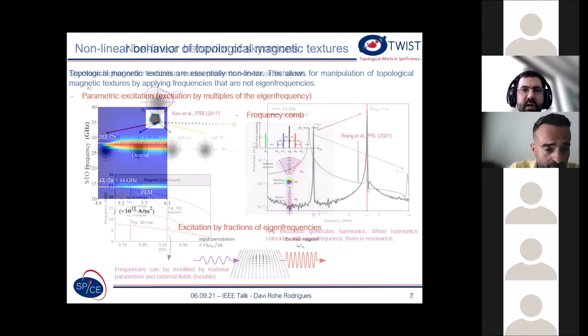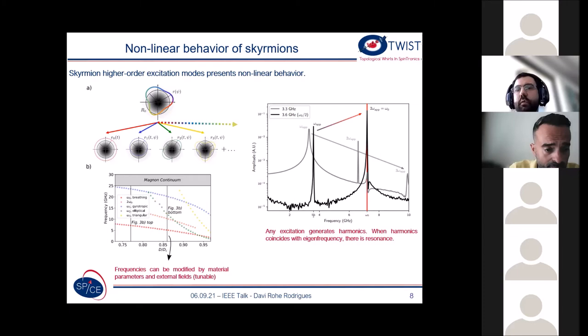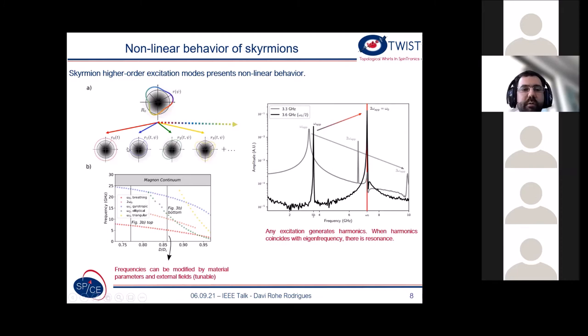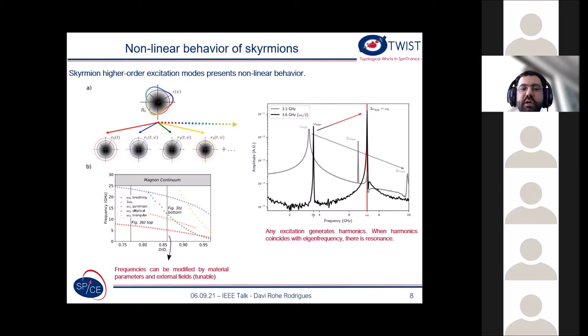Focusing a bit more on skyrmions - though the theory works for droplets, domain walls, and any localized magnetic topological object - skyrmions have several higher-order modes. Beyond the breathing mode, we also have the gyrotropic mode which is a translational mode, the elliptical mode, the triangular mode, and so forth, corresponding to changes in the shape of your skyrmion. The frequencies of these excitation modes depend on the material - for example, on the DMI - but can also be changed by magnetic field and temperature, meaning these frequencies are actually tunable.